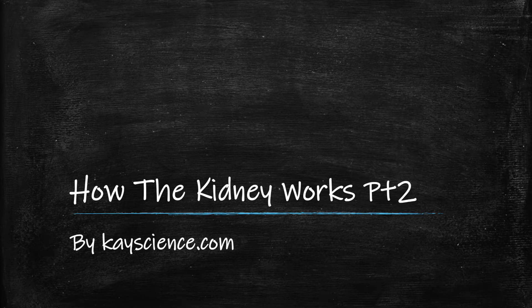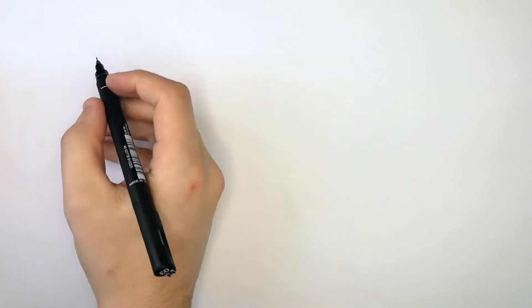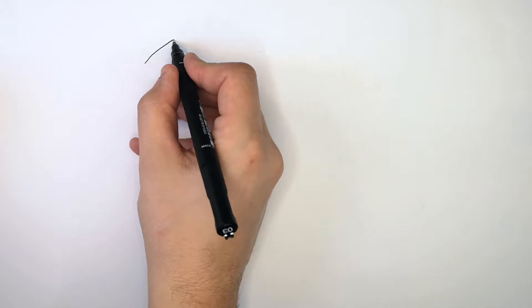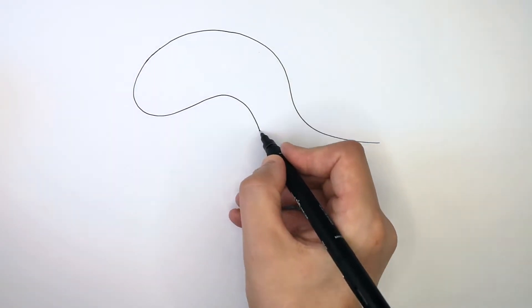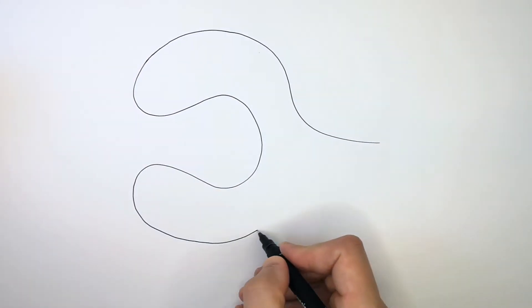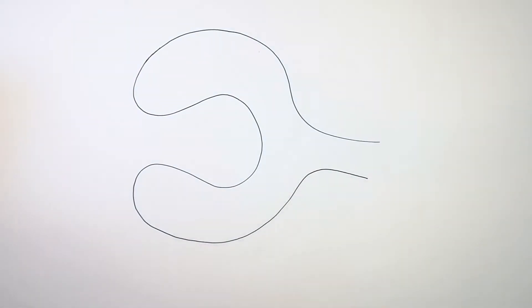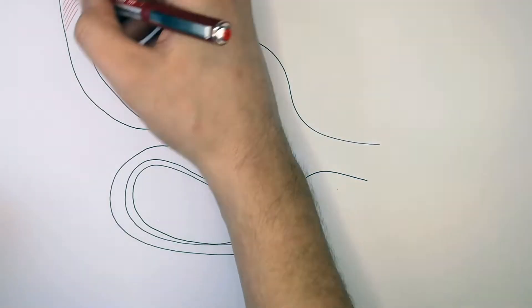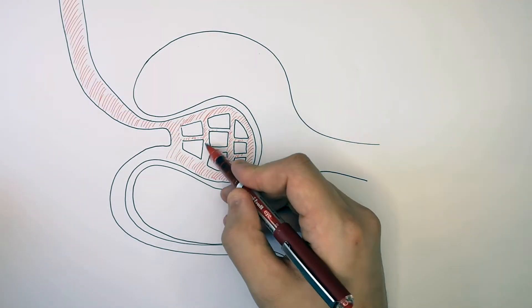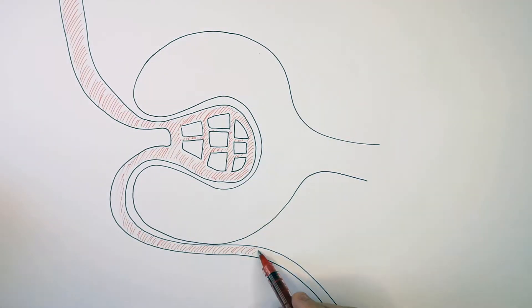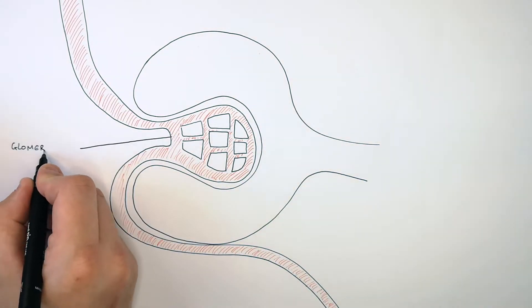How the Kidney Works Part 2 by KScience.com. I'm now drawing the Bowman's capsule of the nephron. This is the Bowman's capsule, and inside the Bowman's capsule is a series of capillaries called the glomerulus.